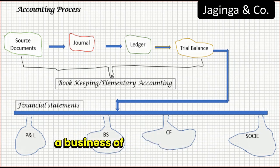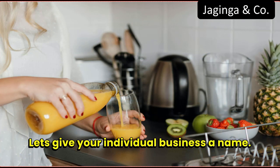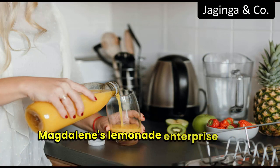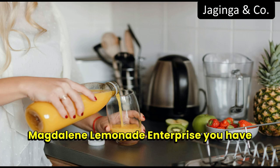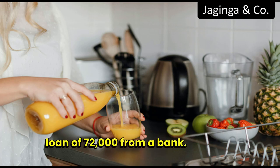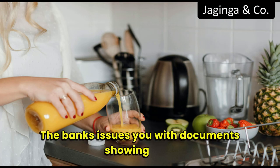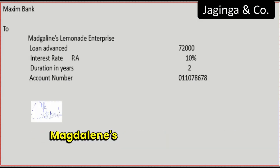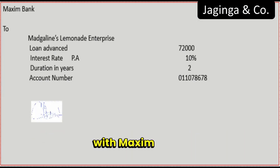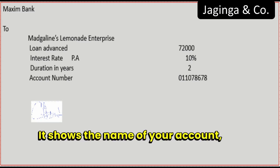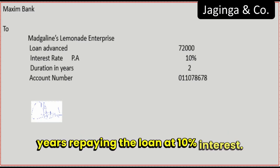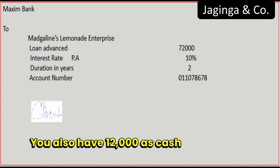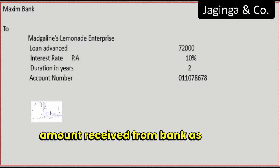Let's assume you want to start a business of making lemonade. Let's give your individual business a name: Magdalene's Lemonade Enterprise. Let's also say your business starts in January 2024, and in Magdalene's Lemonade Enterprise, you have borrowed a loan of $72,000 from a bank called Maxime. The bank issues you with documents showing they have transferred money to your account — Magdalene's Lemonade Enterprise account with Maxime Bank. The document shows the account name, account number, amount transferred and the repayment period of two years at 10% interest. You also have $12,000 in cash to add to the loan amount to fund your business.